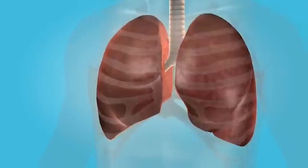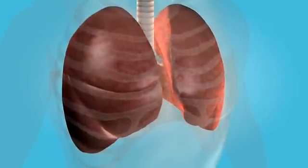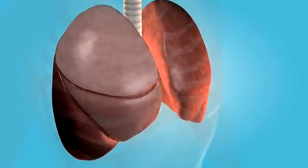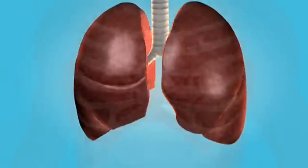The human lungs are comprised of functional units called lobes. There are three lobes in the right lung and two in the left.